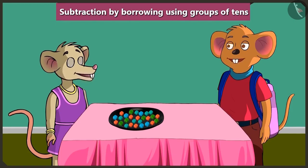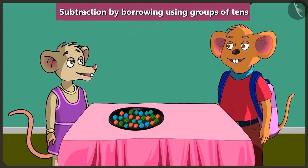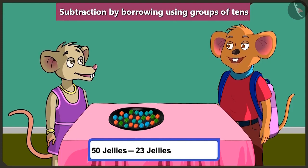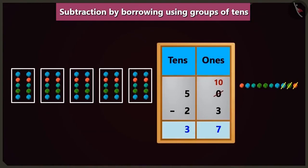Oh Chuchu, I had 50 jellies with me, and from those, I gave 23 jellies to my friend Meethi. So I should have 37 jellies left with me. But there are only 27 jellies here. Chichi, you gave 23 jellies from your 50 jellies, right? Yes. So now tell me, how did you know that 50 minus 23 is equal to 37? I did 50 minus 23 with the help of the table of ones and tens and I got 37 as the answer.